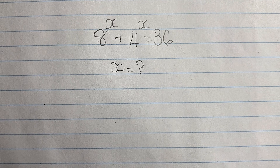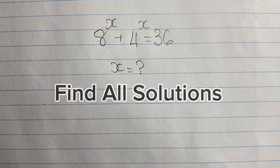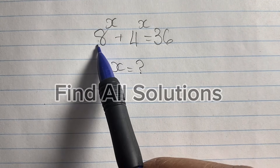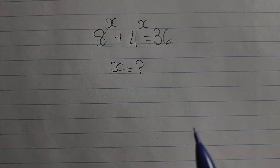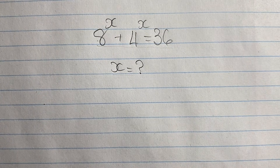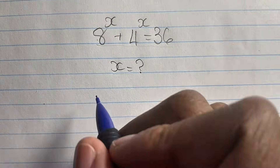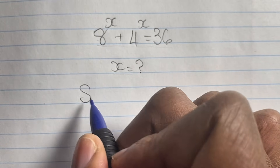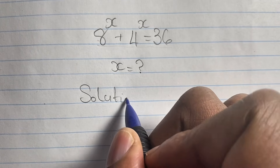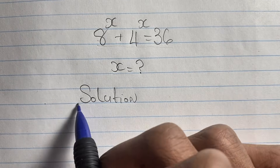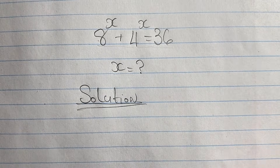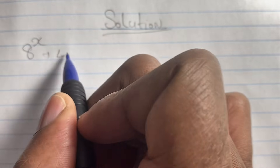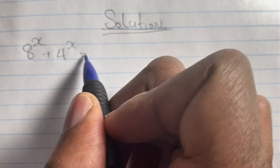Are you a math genius? Let's see if you can solve this equation in less than two minutes. Greetings again everyone, welcome back to my channel. Here we have another algebraic exponential equation that we're going to solve. In this equation we have 8 to the power of x plus 4 to the power of x is equal to 36, and we're given to find the value of x.